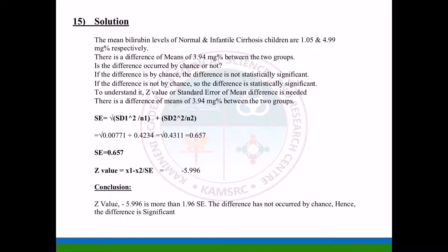The mean bilirubin level of normal and infantile cirrhosis children are 1.05 and 4.99 mg percent respectively. There is a difference of 3.94 mg percent between these two groups. Is the difference occurred by chance or not? To understand it, the z or standard error of mean difference is needed. Using the formula square root of (SD1² / n1 + SD2² / n2), the standard error comes to 0.657.